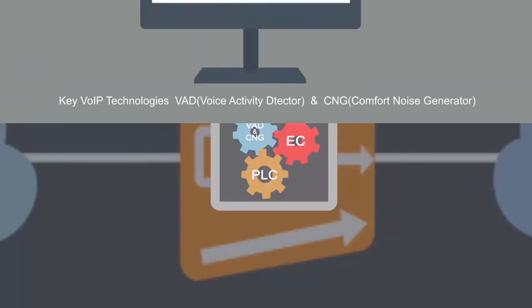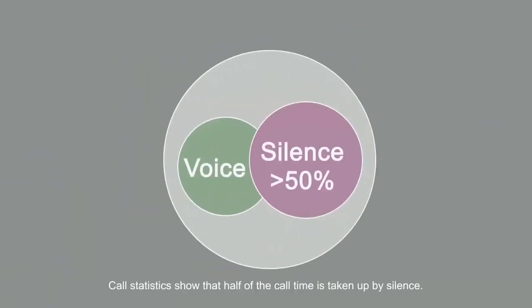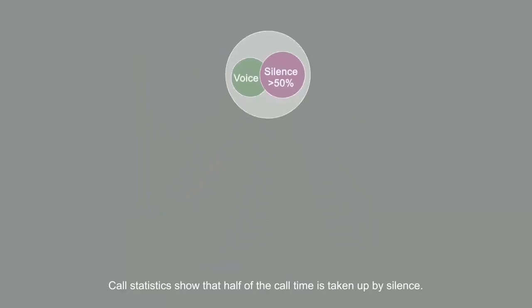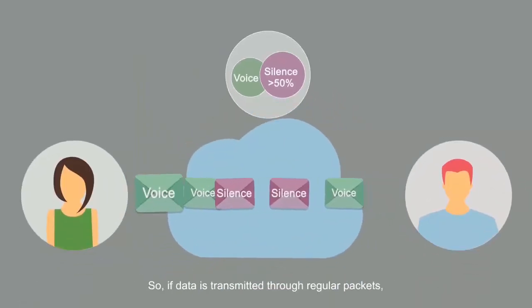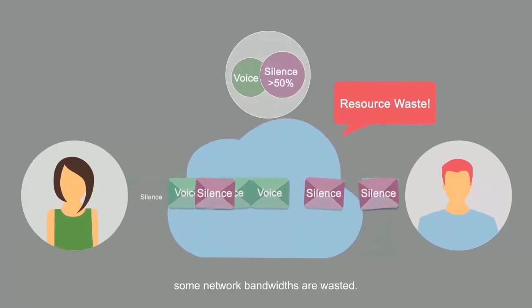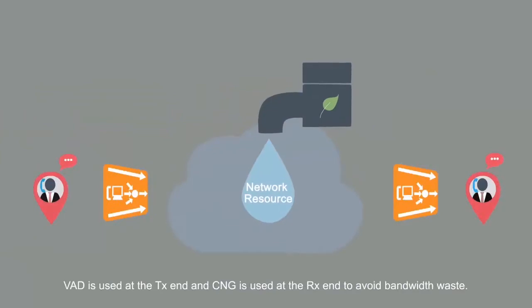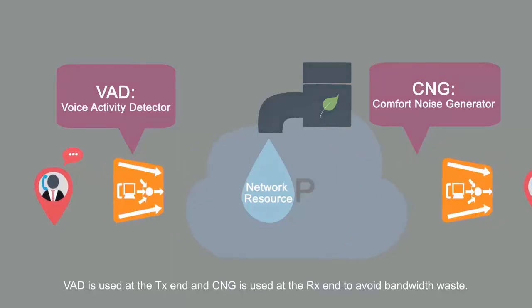Key VOIP technologies: VAD and CNG. Call statistics show that half of the call time is taken up by silence. So if data is transmitted through regular packets, some network bandwidth is wasted. VAD is used at the transmit end and CNG is used at the receive end to avoid bandwidth waste.